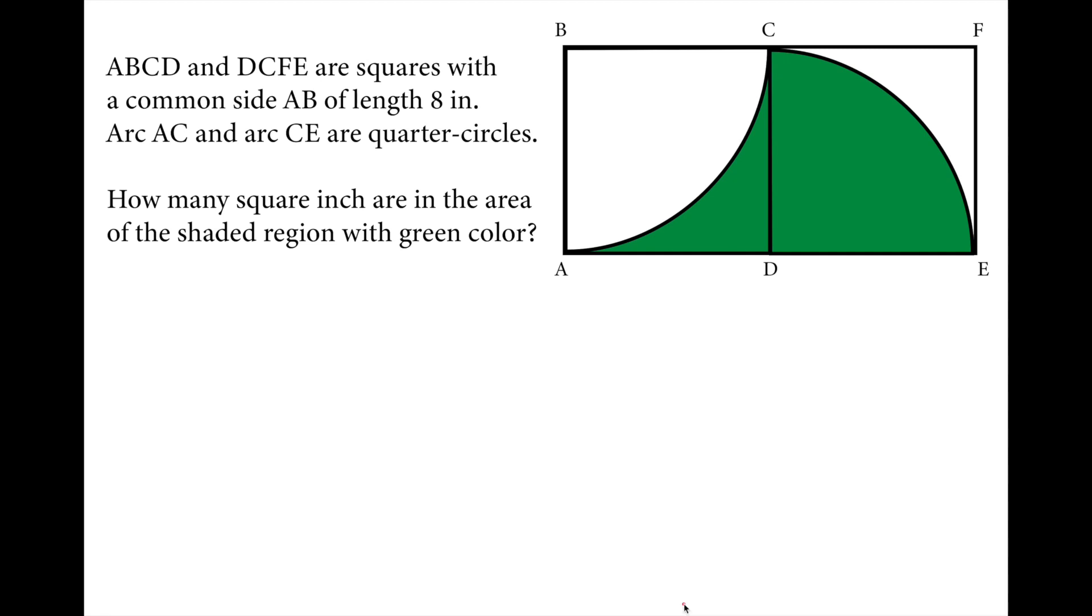Hi, in this question we will solve this Math Olympiad fourth grade question. Let's read the question: ABCD and DCFE are squares with a common side AB of length 8 inches. Arc AC and arc CE are quarter circles.